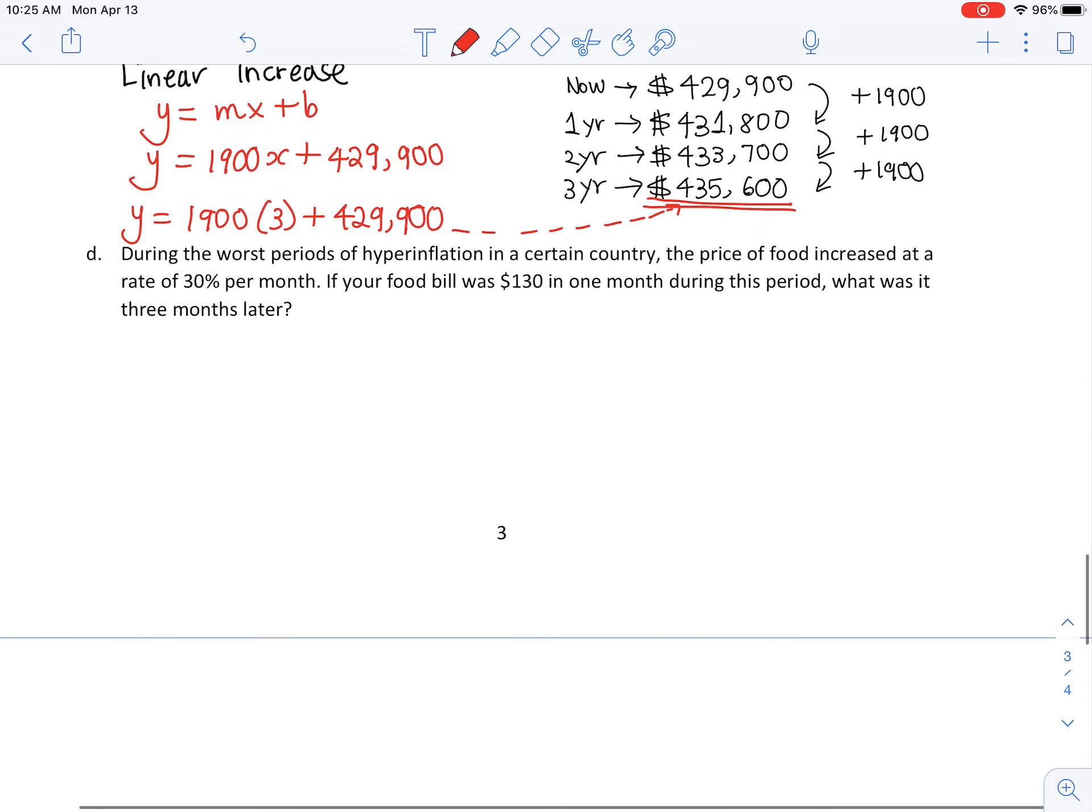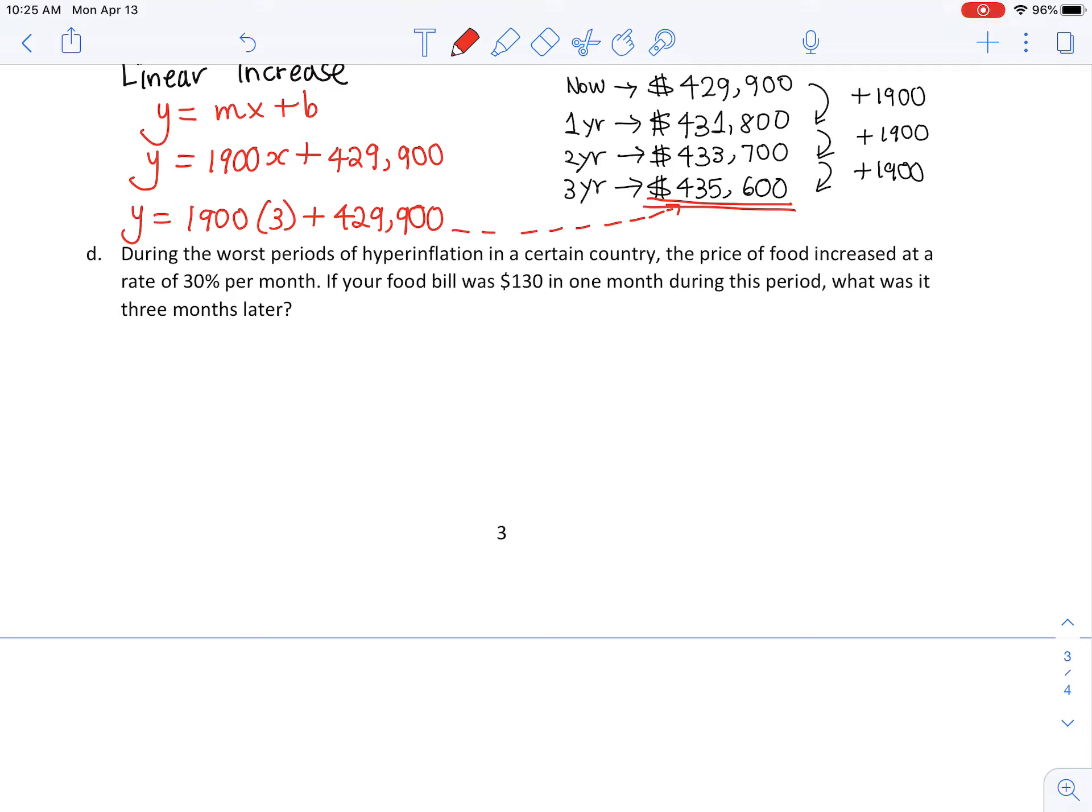Let's do the very last one. During the worst period of hyperinflation in a certain country, the price of food increased at a rate of 30% per month. This is going to be that relative amount, going up by relative amount. 30% of $100 is going to be different from 30% of $5,000. This is relative amount, therefore this is going to be exponential increase.